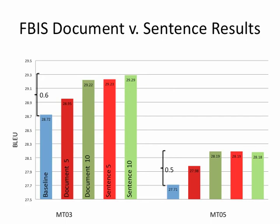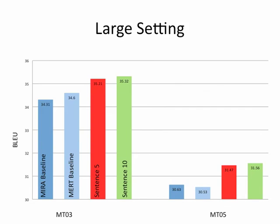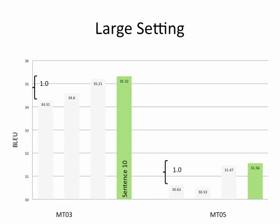Given this surprising result, we decided to try it out on a larger corpus using sentences as tiny documents. Ten topics seemed to be about where we started to see no appreciable gains — perhaps with larger data we would see more. Using sentences as our tiny documents with ten topics, we do one point better than our baseline.